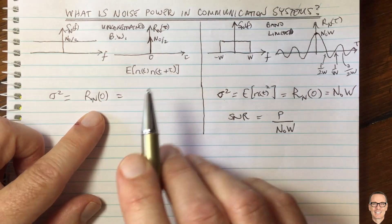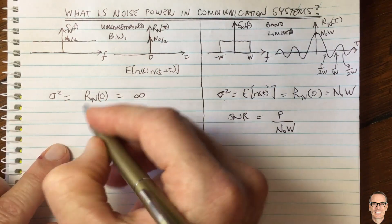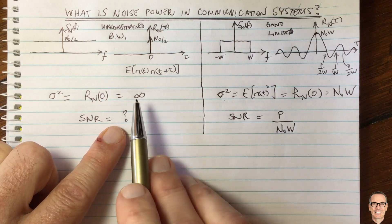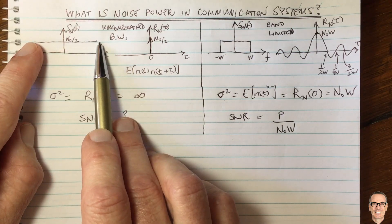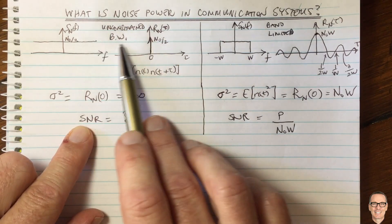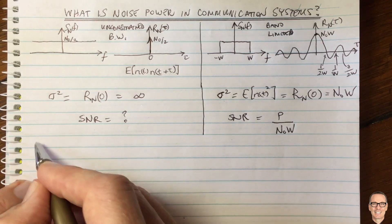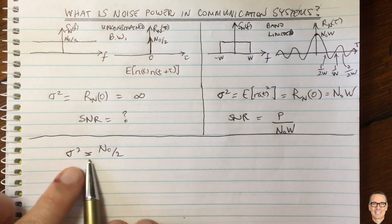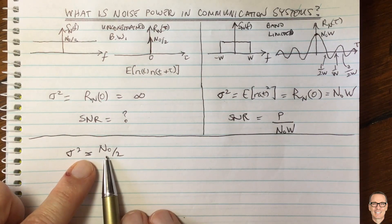However, the height of a delta function at zero is actually infinity — N₀/2 represents the area under the delta function, because it is infinitely narrow but infinitely high. So the noise power in the unconstrained bandwidth case is actually infinity, making the SNR ill-defined. This makes sense because the area under a flat power spectral density extending to infinity is infinite. So what SNR are textbooks actually referring to in the unconstrained bandwidth case?